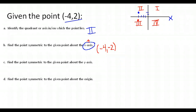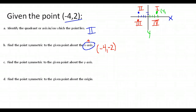When you do symmetry about the y-axis, here's our y-axis — the vertical one. We want the point to be exactly reflected over that axis. Our given point was four to the left, so our symmetric point would be four to the right of that axis, giving us the point four, two. Notice what happened: I changed the sign of the x-value.